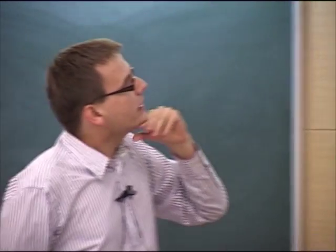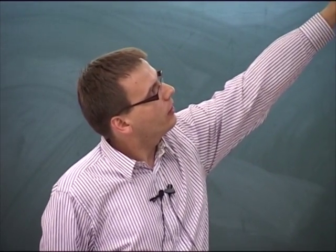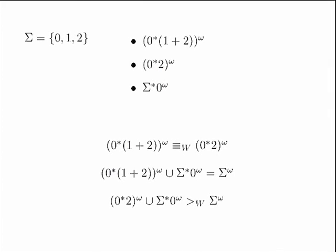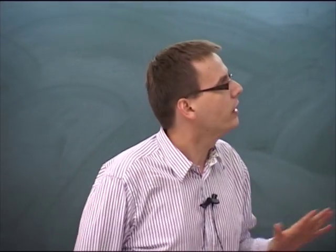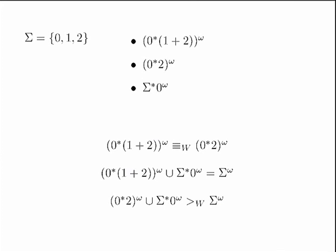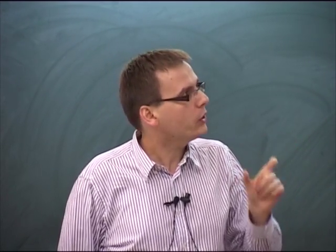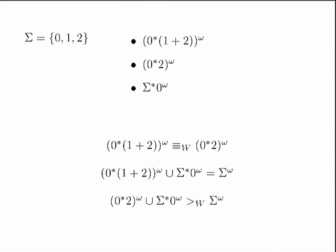The first two languages are essentially the same language in disguise. But if you take the union with the third language — words that eventually stabilize at zero — in the first case you get all possible words (as simple as it can be), while in the second case you get the language of words satisfying the parity condition where the highest number repeating infinitely often is 2. This language is much more difficult topologically, and in terms of the index it requires a [0,2] deterministic word automaton but not a [1,3] automaton. So there is no chance this property holds for all automata.